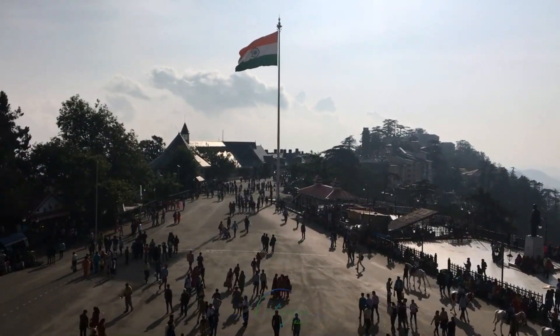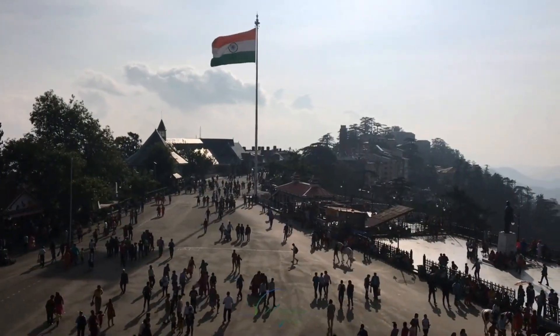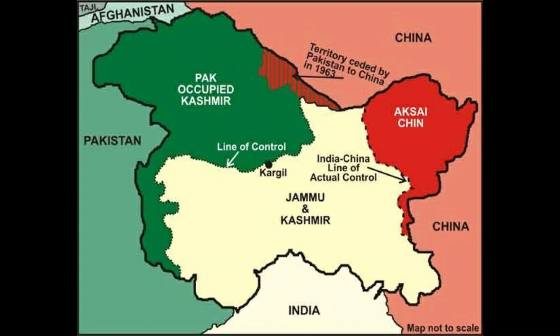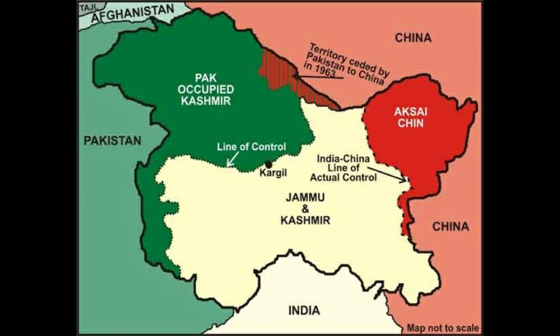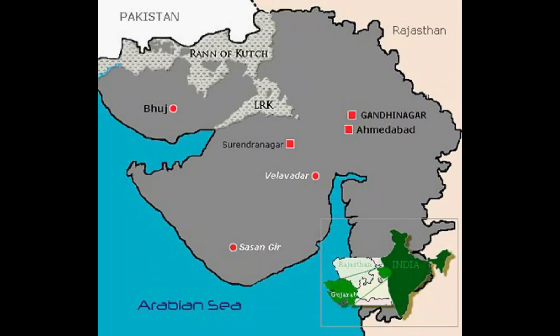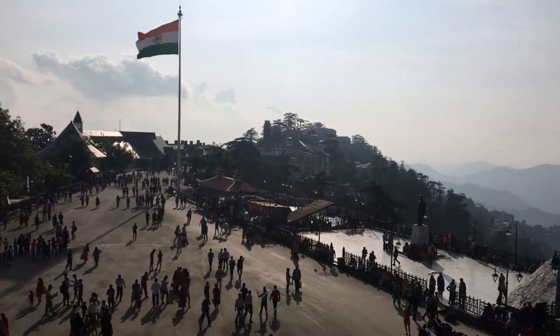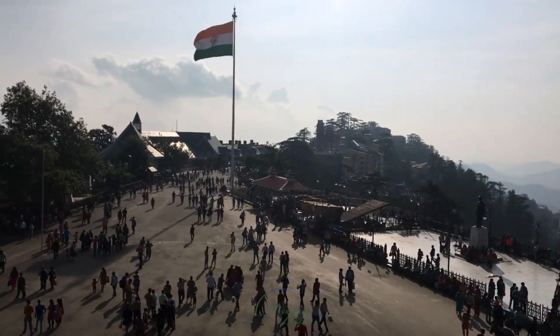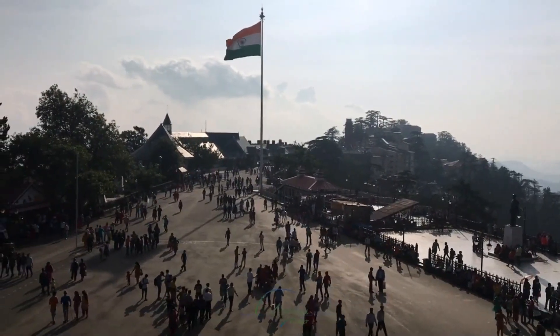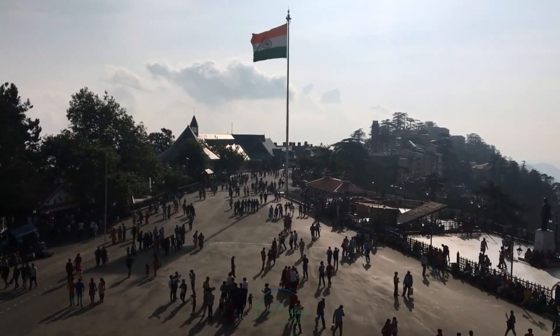Since the partition of British India in 1947, Pakistan and India remained in contention over several issues. Although the Kashmir conflict was the predominant issue dividing the nations, other border disputes existed, most notably over the Rann of Kutch, a barren region in the Indian state of Gujarat. The verdict which came later saw Pakistan awarded 350 square miles of the Rann of Kutch, as against its original claim of 3,500 square miles.